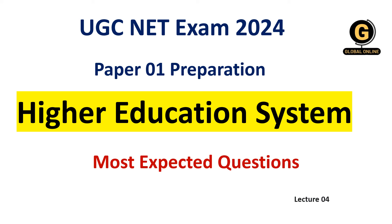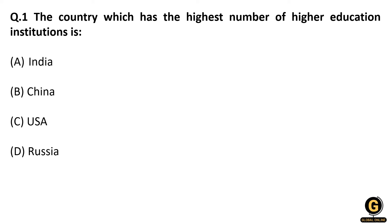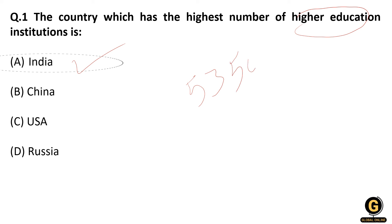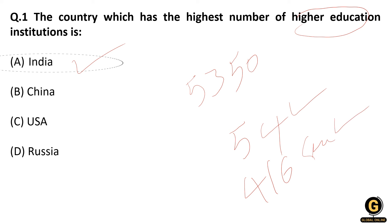If you have not watched the earlier three lectures, go watch them — link is in the description. Now, the question is: which country has the highest number of higher education institutes? The correct answer is India. India has 5,350 higher educational institutes, of which there are 54 central universities and 416 state universities.